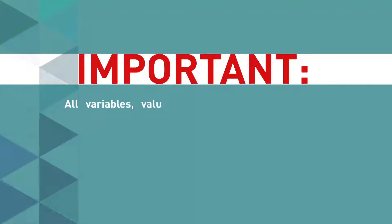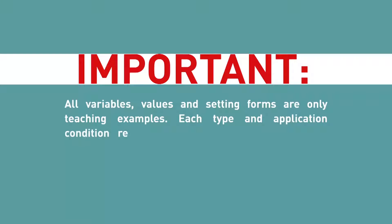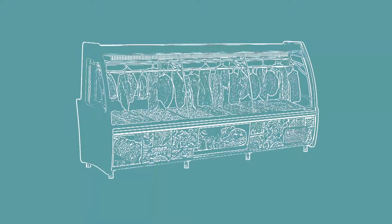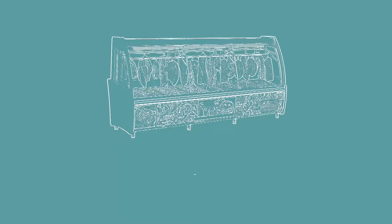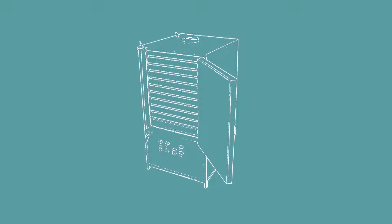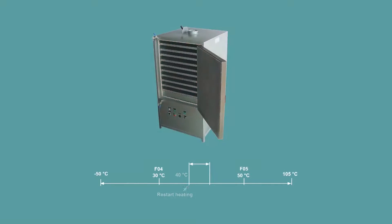Important. All variables, values and setting forms are only teaching examples. Each type and application condition require a careful analysis of all the available parameters for the best possible setting with maximum performance and safety. In the cooling example, we will consider a refrigerated counter where the temperature or set point must be maintained at 2 degrees Celsius. In the heating example, we will simulate a drying oven, which must be maintained at 45 degrees Celsius.